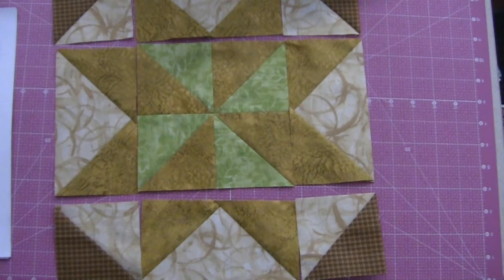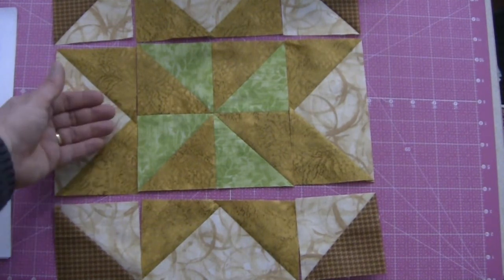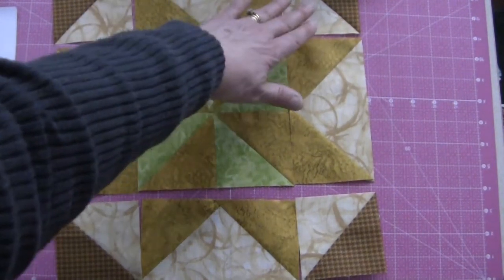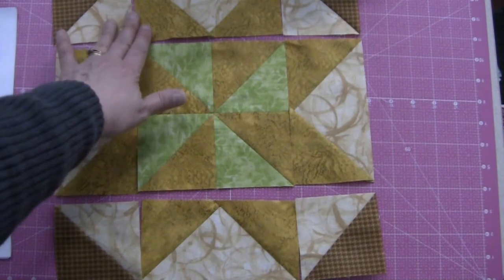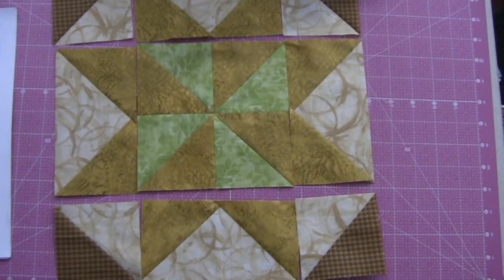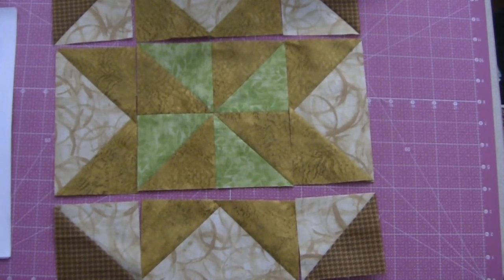And as we put them together, what we're going to do is press the seams away from the flying geese, so toward the pinwheel, toward the half-square triangles. And then our seams between each row will nest together and we're going to finish assembling the block. So I'll meet you back here when I've got my block finished so you can see what it looks like.